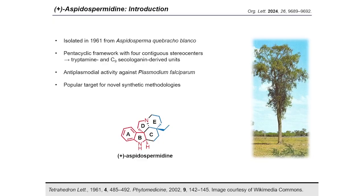Based on our ongoing interest in asymmetric allylic substitution methodology, as well as natural product synthesis, we proposed a novel anti-selective palladium-catalyzed allylic substitution strategy for the synthesis of aspidospermine.